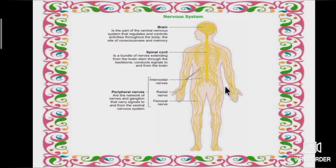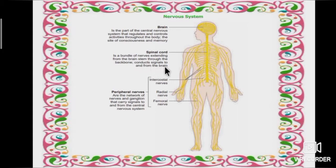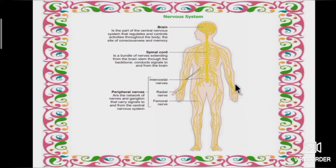Looking at the picture of the nervous system: the brain is the part of the central nervous system that regulates and controls activities throughout the body — it is the site of consciousness and memory. The spinal cord is a bundle of nerves extending from the brain stem through the backbone; it conducts signals to and from the brain. Peripheral nerves — including intercostal nerves, radial nerve and femoral nerve — are the network of nerves and ganglia that carry signals to and from the central nervous system. All bodily activities, voluntary and involuntary, are controlled by the nervous system.